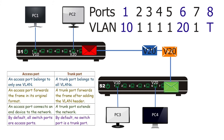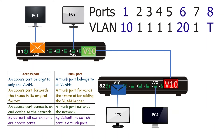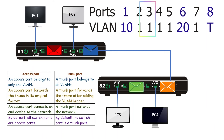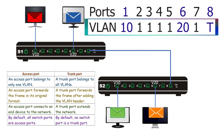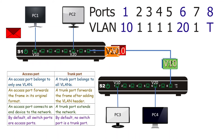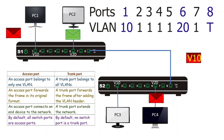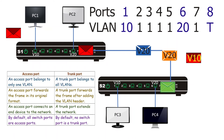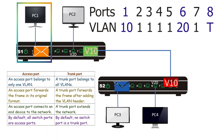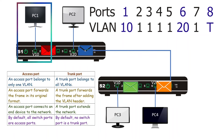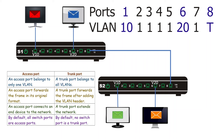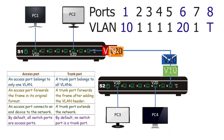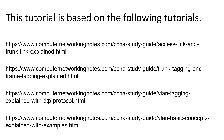To summarize the main differences: an access port belongs to only one VLAN, while a trunk port belongs to all VLANs. An access port forwards frames in their original format; a trunk port forwards frames after adding a VLAN header. An access port connects an end device to the network; a trunk port extends the network between switches. By default, all switch ports are access ports and no switch port is a trunk port.